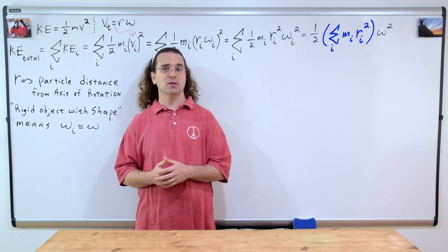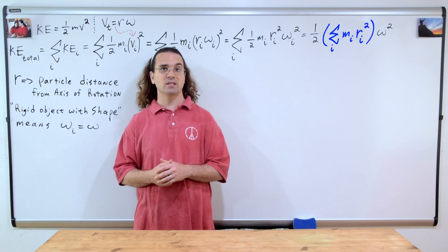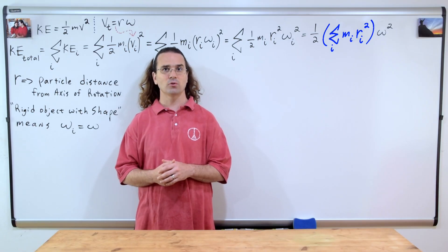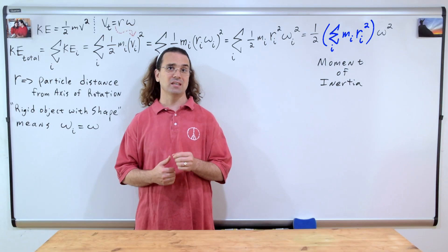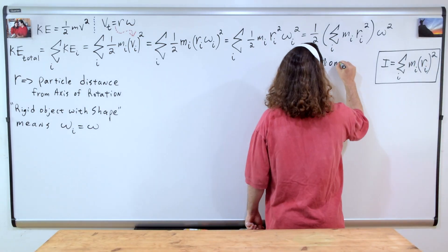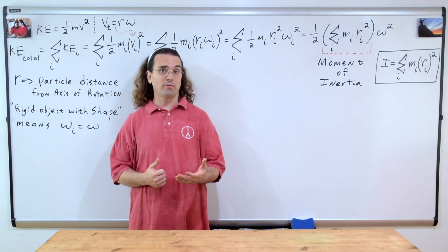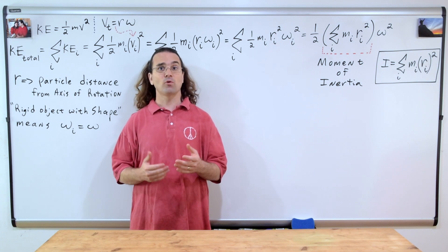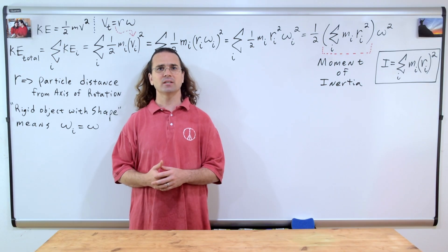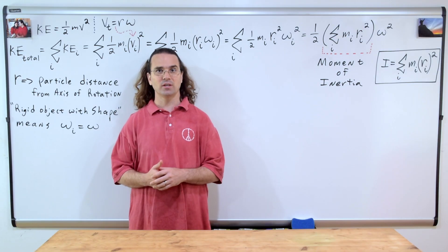Now we have parenthetically isolated the sum of the mass of each piece times the square of the distance each piece is from the axis of rotation. This is defined as the moment of inertia of the object. The moment of inertia, the symbol for which is a capital I, is defined as the sum of, for every small piece which makes up the object, the quantity mass times the square of the distance each small piece is from the object's axis of rotation.